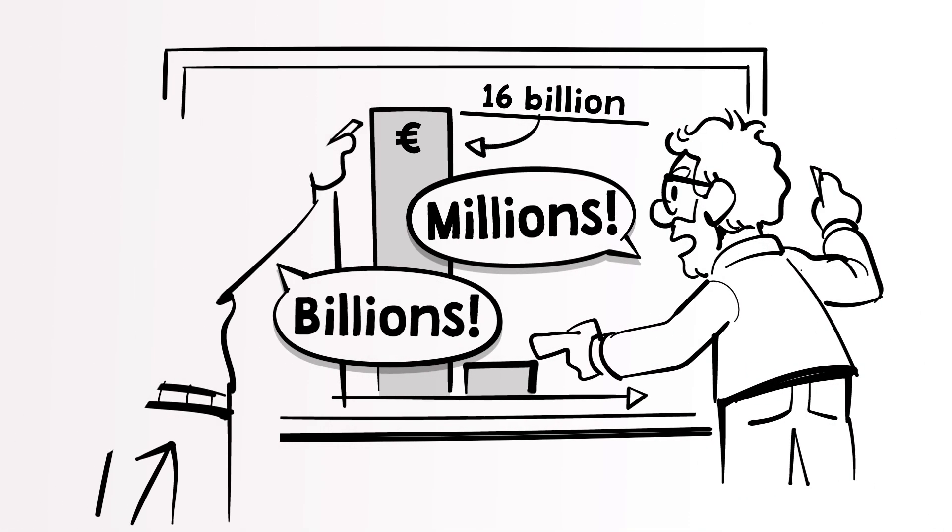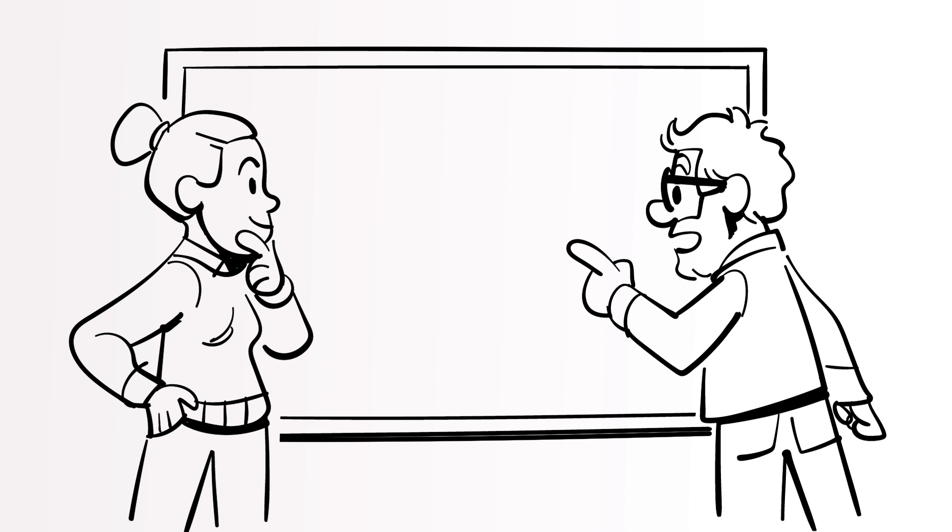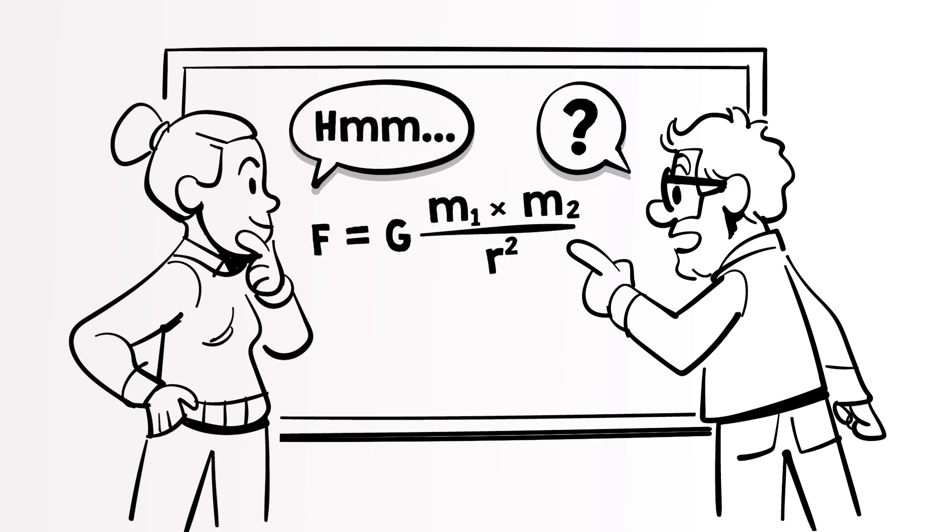We should not argue about whether these estimations are correct, but how we can improve them. We must accept that estimation models will always be discussable. At the same time, they are necessary if we want to know how big the problem of money laundering and tax evasion really is.